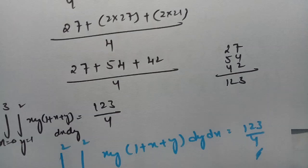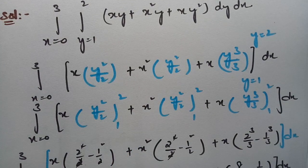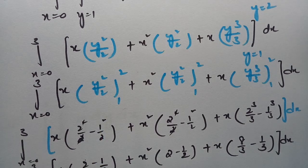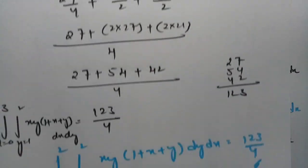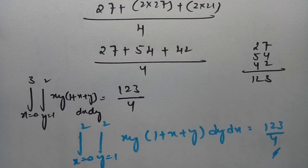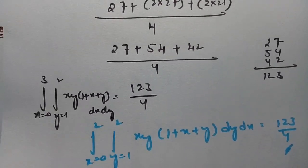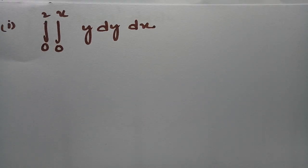So this is how we solve: first integrate with respect to y, substitute the limits, then integrate with respect to x to get the answer 123/4. Now the next problem is ready — the double integral from 0 to 2.